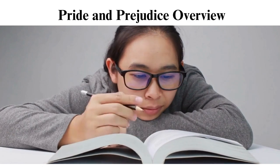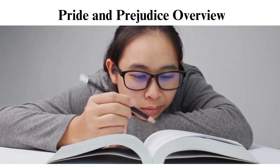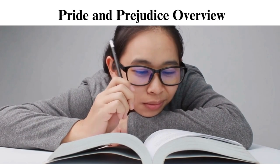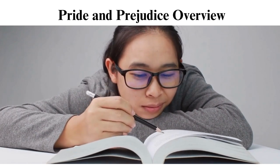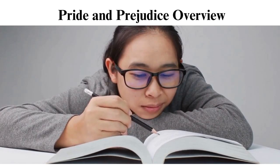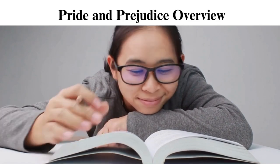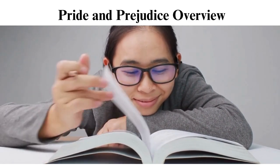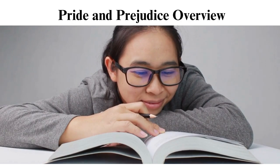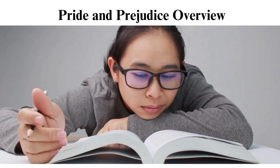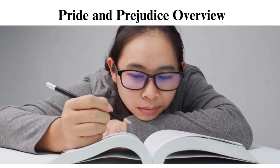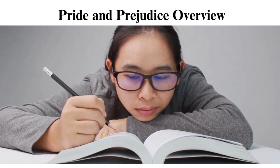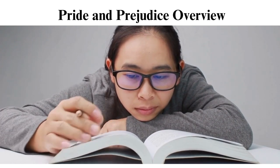Darcy confesses that he loves Elizabeth, which she rejects. He then confesses in a letter that Wickham has evil intentions and wants to marry her sister for her inheritance. Later, Lydia, Bennet's last born, elopes and marries Wickham. Elizabeth is shocked by this news because she knows the affair could lead to a scandal and ruin her sister's reputation. As the story ends, Mr. Bingley returns to Netherfield.